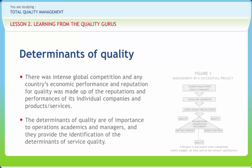The determinants of quality are of importance to operations academics and managers, providing identification of the determinants of service quality. Some quality determinants are predominantly satisfiers and others are predominantly dissatisfiers. The predominantly satisfying determinants are attentiveness, responsiveness, care, and friendliness, while dissatisfiers are integrity, reliability, responsiveness, availability, and functionality. Responsiveness is identified as a crucial determinant of quality, as it is a frequent source of satisfaction and its absence is a major source of dissatisfaction. Companies seeking to improve service or product quality must review needs for data collection, presentation, and quality skills at all managerial levels.